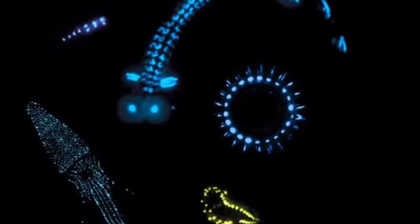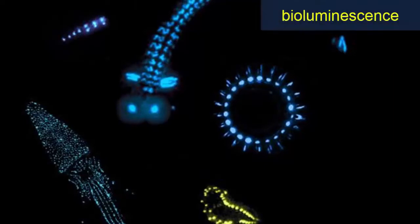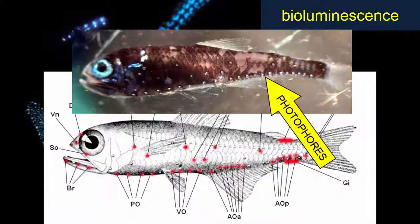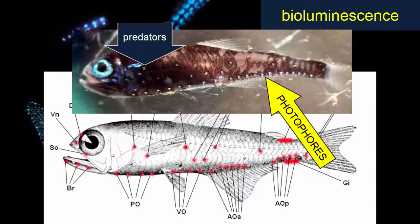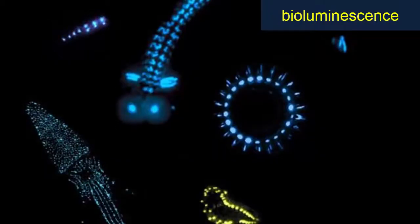Some organisms in the oceans can produce their own light — we call this bioluminescence. It is usually produced by chemical reactions performed either by the organism itself or by bacteria living in an organ inside the organism. Light-producing cells are called photophores. Some fish have photophores lining their bellies for countershading: when predators below look up, the photophores allow the fish to blend in with the surface light coming downwards, while predators above looking down see its dark top, which blends with the darkness below.